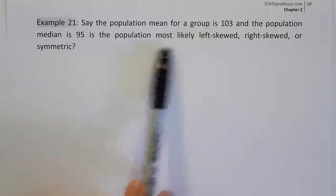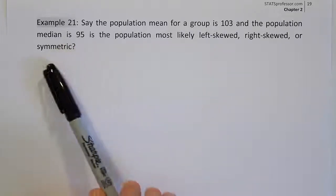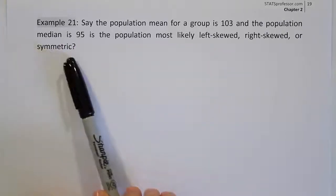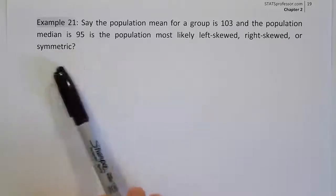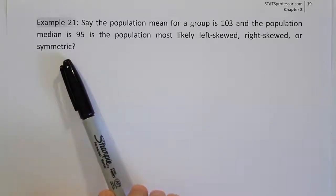Well, the fact that these two numbers are different from one another eliminates the chance that it's symmetric. So we can eliminate that option because in symmetric distributions, the mean and the median are the same.